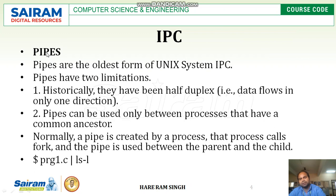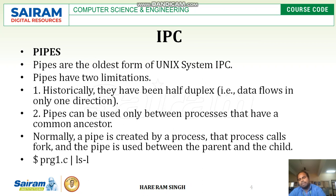Let us study the first method of IPC, which is called pipes. Pipes are the oldest form of UNIX system inter-process communication. A pipe is basically a buffer which can hold some data, so that one process can read the data from the pipe and another process can write the data into the pipe.